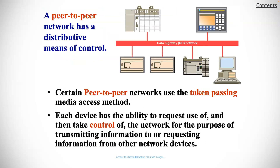You can also have peer-to-peer networks that have a distributed means of control. Certain peer-to-peer networks use a token passing method of access. Each device has the ability to request use of and then take control of the network for the purpose of transmitting information to or requesting information from other network devices.